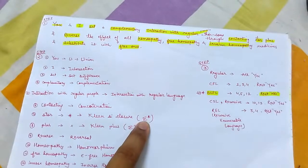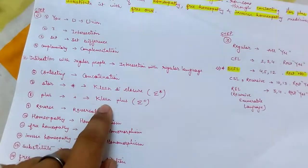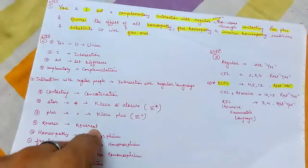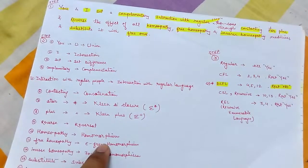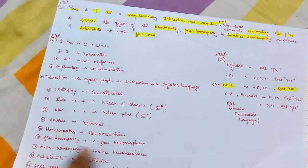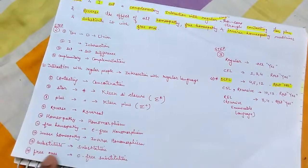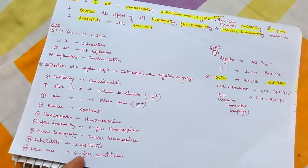Then star, it's easy, star means Kleene closure. Then plus, it's easy, it's Kleene plus. After that, reverse, you know, reversal property. Then homeopathy, that means homomorphism property. Then free homeopathy, that's free means epsilon-free. Inverse means inverse. Substitute, coming from here it's substitution. Free ones, that means the free part of substitute, that means epsilon-free substitution.